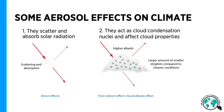Aerosol particles scatter solar radiation and reduce the amount of solar radiation reaching the ground, thus cooling the surface. Some aerosols, especially black carbon, absorb solar radiation and thus warm the climate. Aerosol particles also act as cloud condensation nuclei — the more nuclei there are, the more and smaller cloud droplets there are in the cloud, and the brighter the cloud. Bright clouds reflect solar radiation efficiently back to space and thus cool the surface. Aerosol effects on clouds are very complex and are the largest uncertainties in our understanding of the forces driving current climate change.